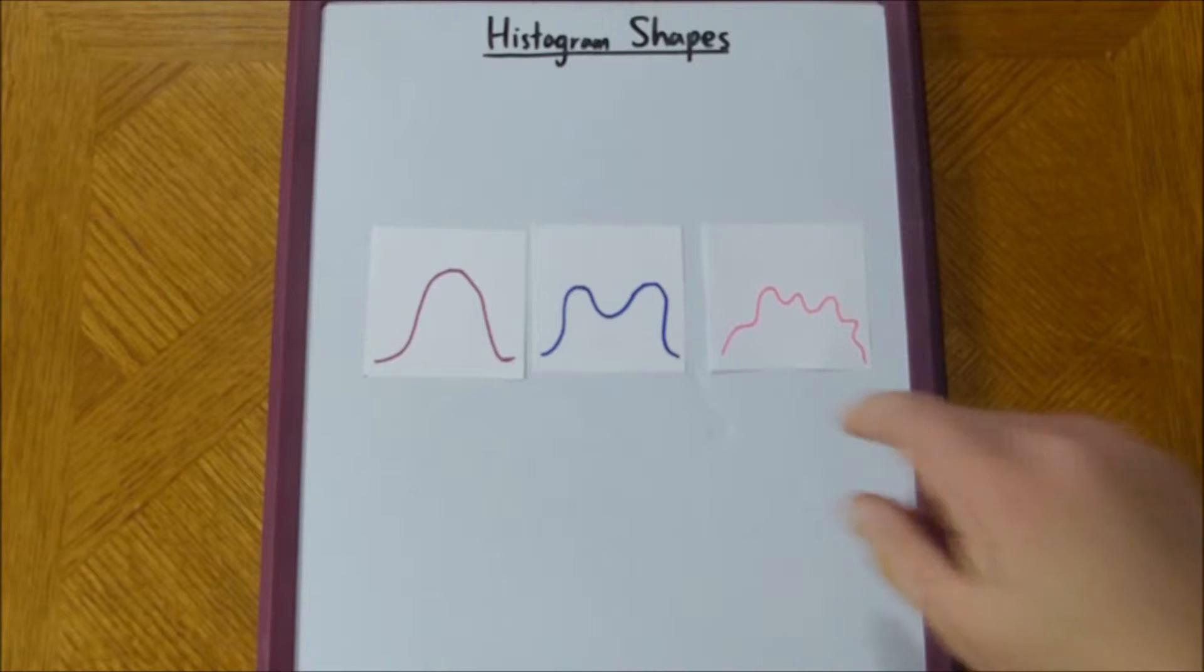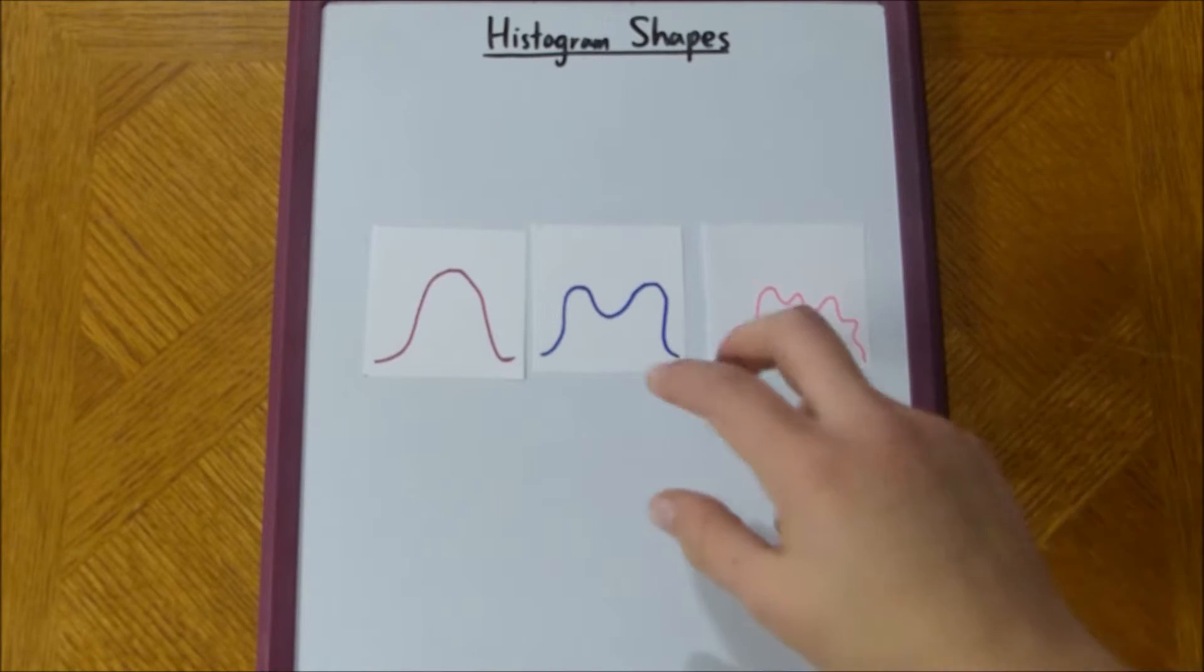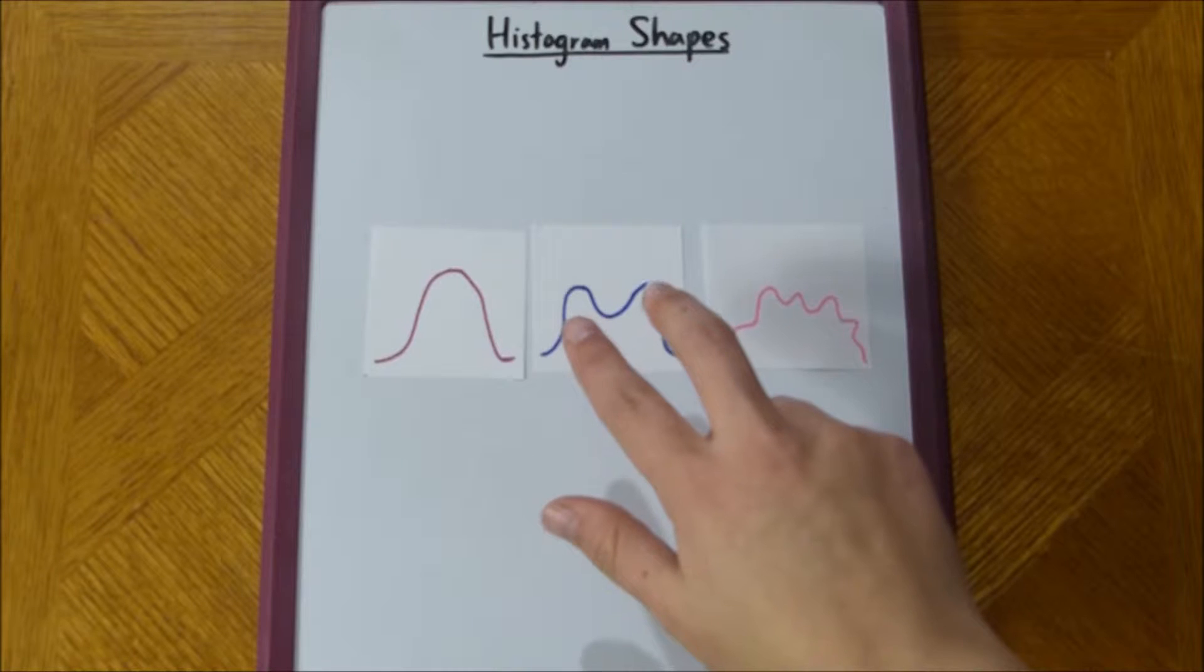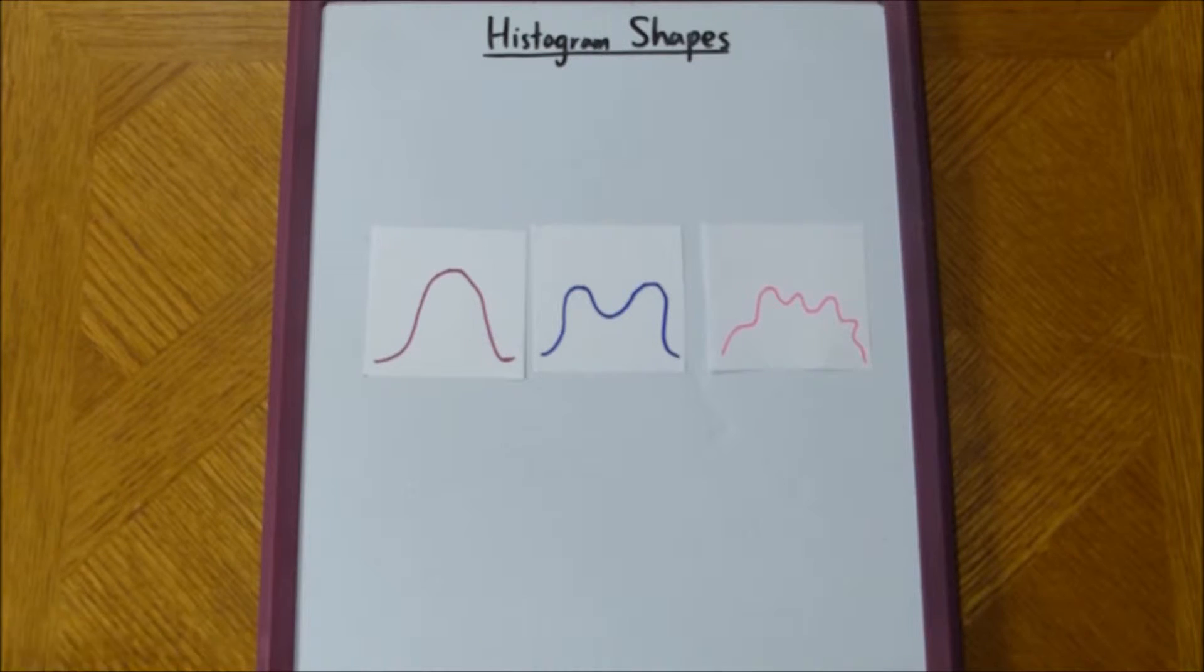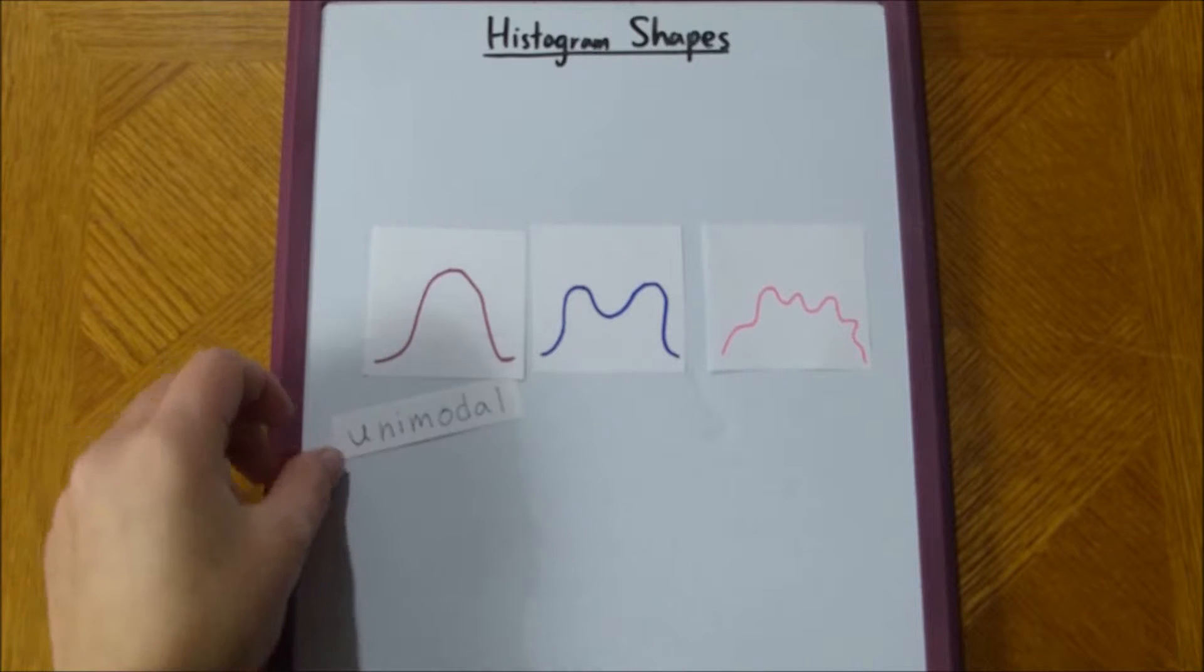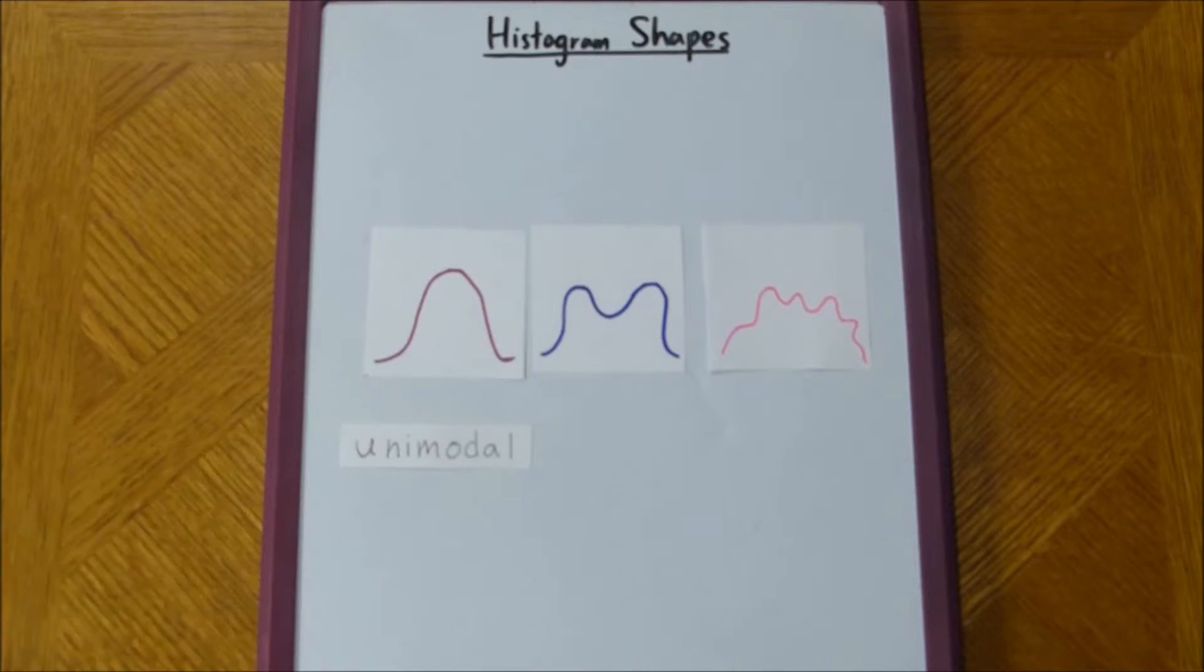So, as you can see, this first one only has one peak or one mode. This second one has two modes, and this third one has many modes. So, the names we use for these are unimodal, one mode, makes sense.